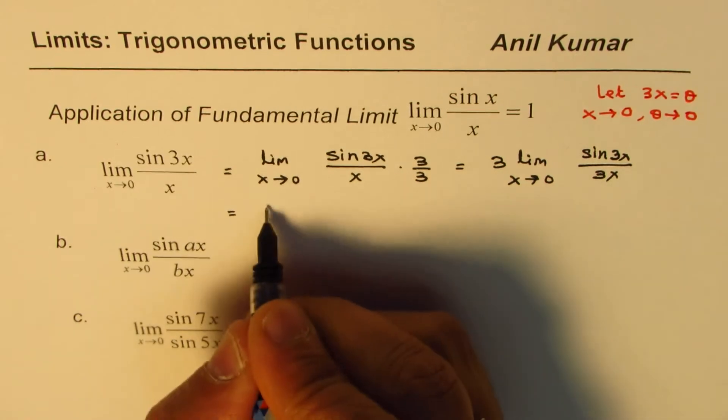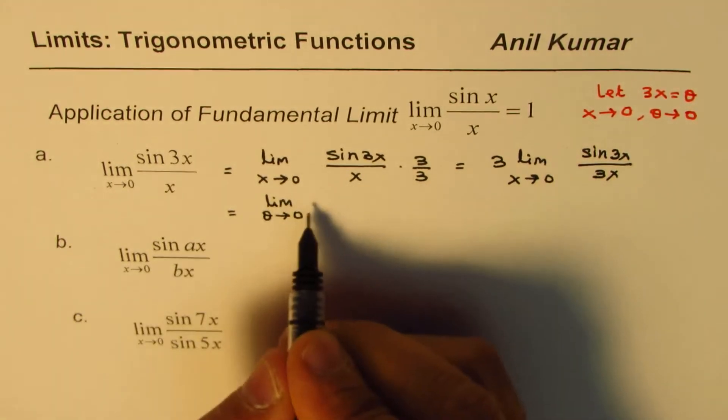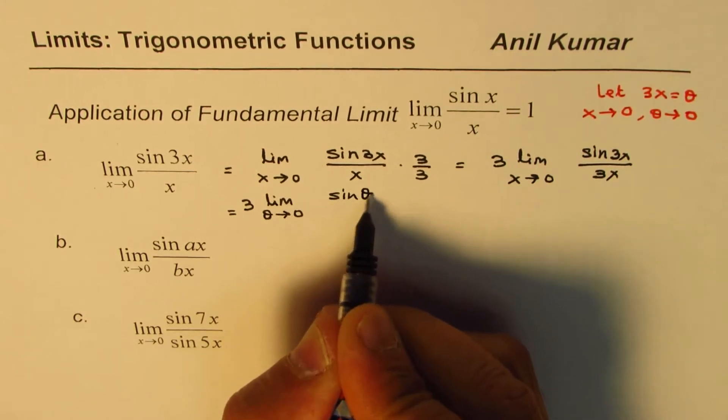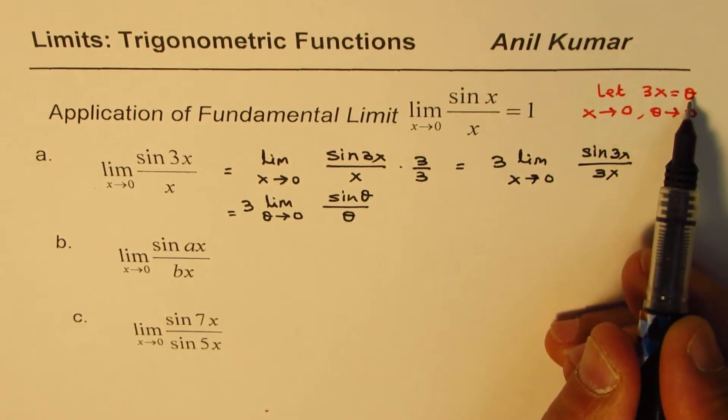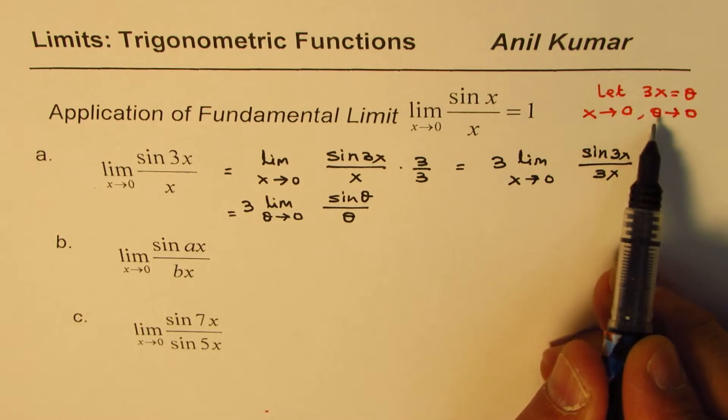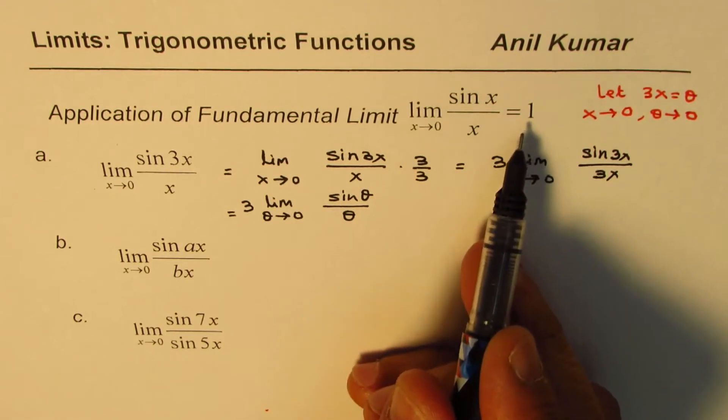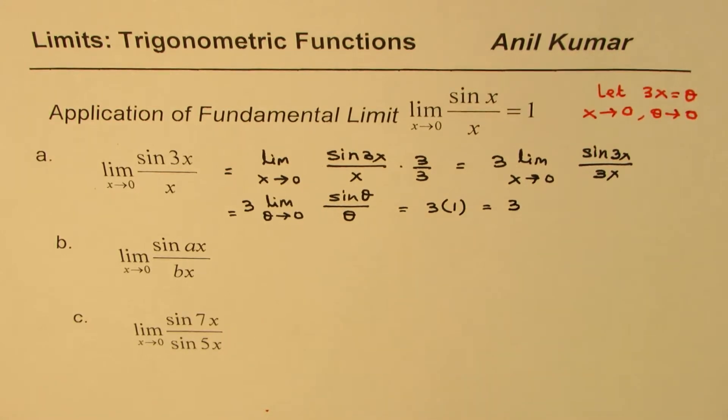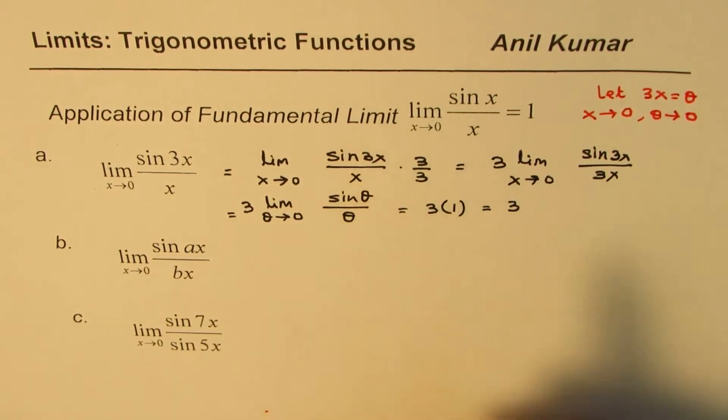And then rewrite the expression as limit theta approaching 0. 3 is here outside. Let me write 3 here first. Sin theta over theta. So we made a small substitution saying that let 3x equals to theta. Then when x approaches 0, theta approaches 0. So I could write this as sin theta over theta. Now you know this limit is 1. So you could write this as 3 times 1. And therefore the result is 3. So that is how you could get limit of these functions. We have basically applied the fundamental limits.